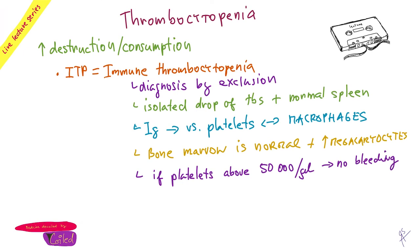If someone comes and bleeds but thrombocytes are normal, in terms of incidence the most common cause is von Willebrand's disease. These two — ITP and von Willebrand — are the main ones to think of first. If platelet count drops below 50,000, they will bleed — epistaxis, petechiae, whatever. In the mild form, what would you do? Prednisone is the answer. Give prednisone to children and very likely the thrombocytes will go up again.